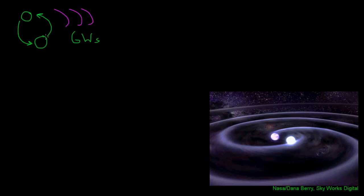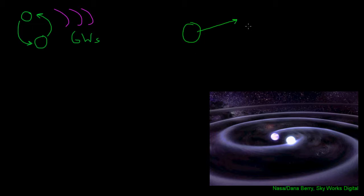For example, if I have two orbiting supermassive black holes with masses of millions to billions of times greater than the mass of the Sun, this kind of system is expected to produce some of the strongest gravitational waves that we expect to see. However, if I have just some isolated mass — even a very heavy mass like a black hole — moving in a straight line with no other masses around it, this will not produce any gravitational waves.